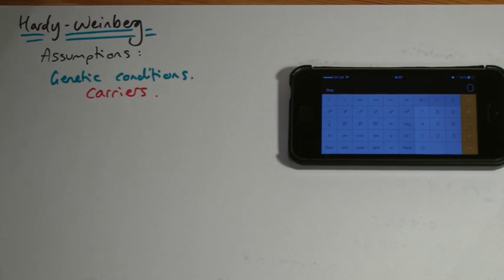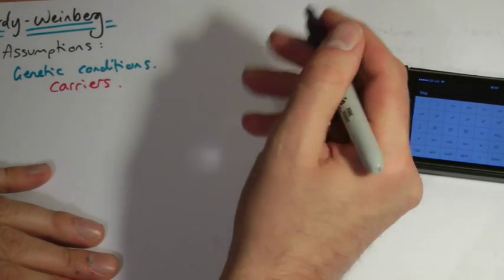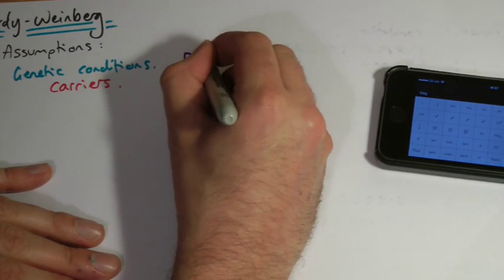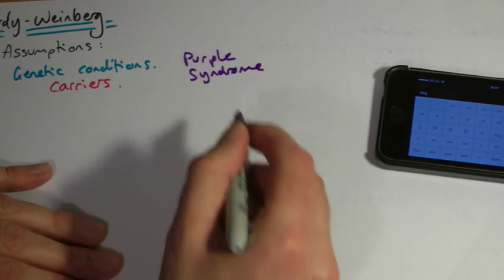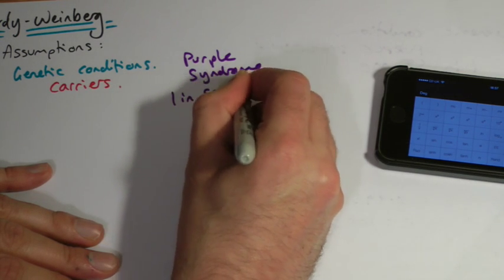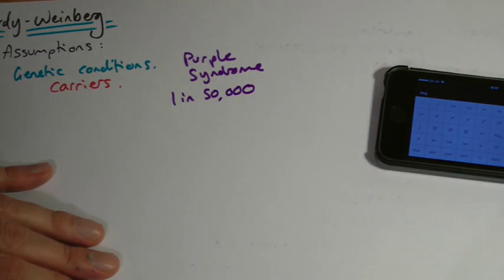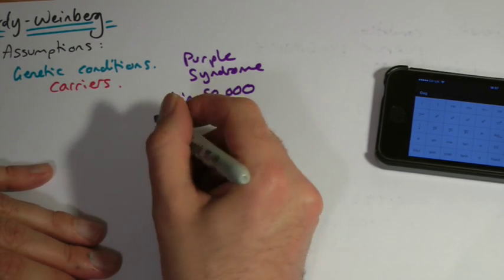Now, let's just make up a condition here. They'll probably give you something that you've never heard of on a test anyway. So let's just say it's purple syndrome. And what happens in purple syndrome, it doesn't even matter, but we're going to say one in 50,000 people have this condition. And the question wants to know how many people are carriers of this condition.